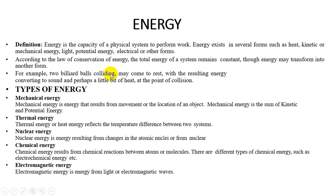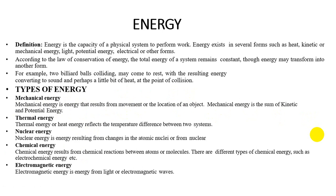Other examples include carom coins, pushing a book, or pushing a door. Now, what are the types of energy? Mechanical energy is the result of movement of an object from one point to another. Mechanical energy is the sum of kinetic energy and potential energy. Then thermal energy is heat energy which reflects the temperature difference between two systems.